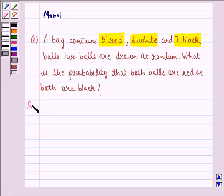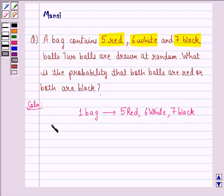So let us start with the solution to this question. Now we see that one bag has 5 red, 6 white and 7 black balls. Therefore, total number of balls is equal to 5 plus 6 plus 7, that is equal to 18.